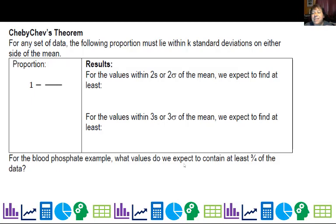And he said that the proportion of data for more than, you know, one standard deviation away, you can figure it out by one minus one over k squared, where k is the number of standard deviations. So if I want values within two standard deviations or two sigma of the mean, well, how much of the data is in there?